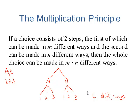And we could get this answer of 6 by multiplying the number of ways we could make the first choice, 2, by the number of ways we could make the second choice, 3. Let's try a couple of examples.